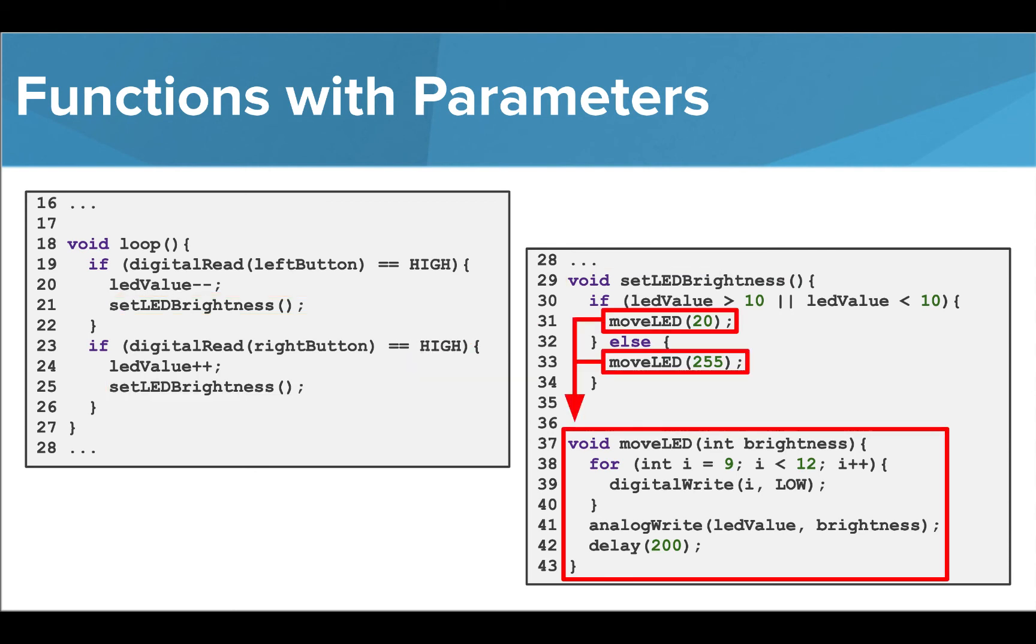The moveLED function takes one parameter that is used inside the function to control the brightness of the LED being lit. This function is being called with different parameter values from the setLEDBrightness function.